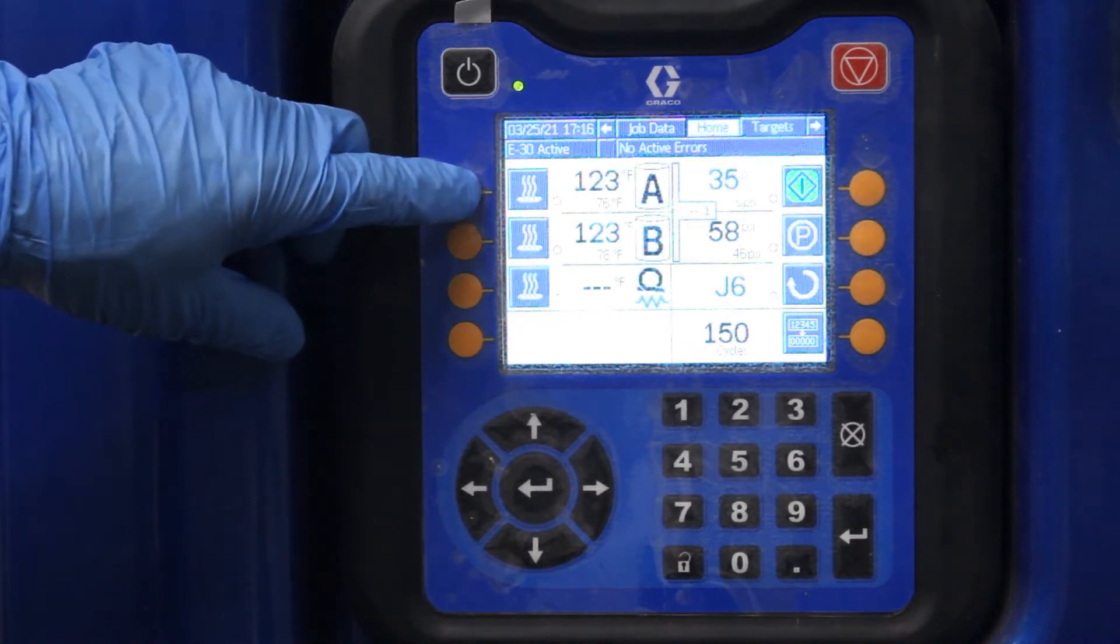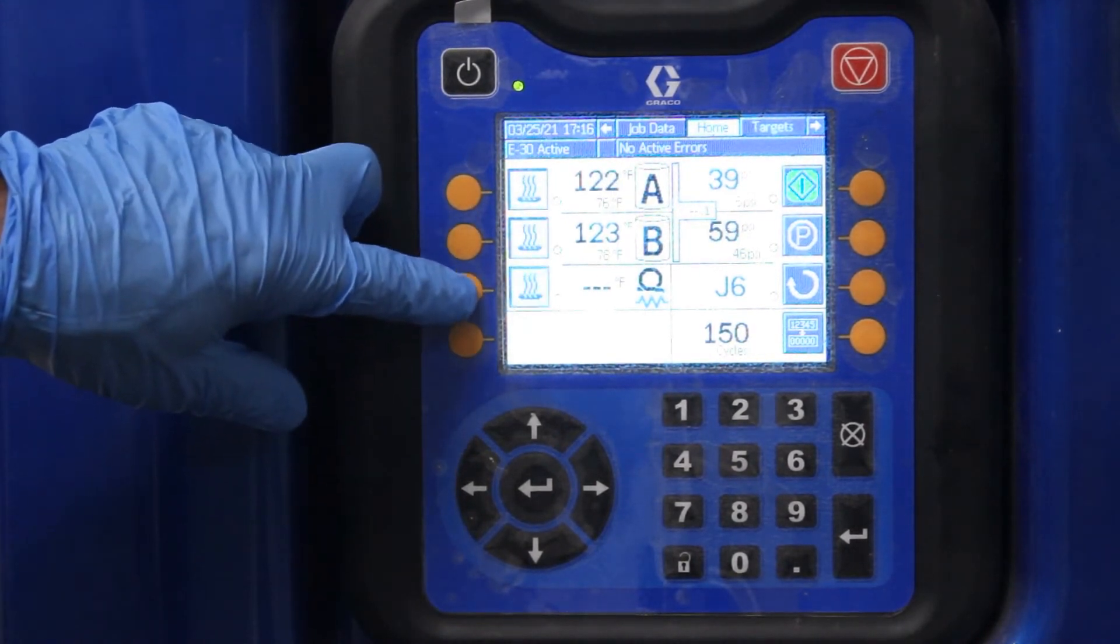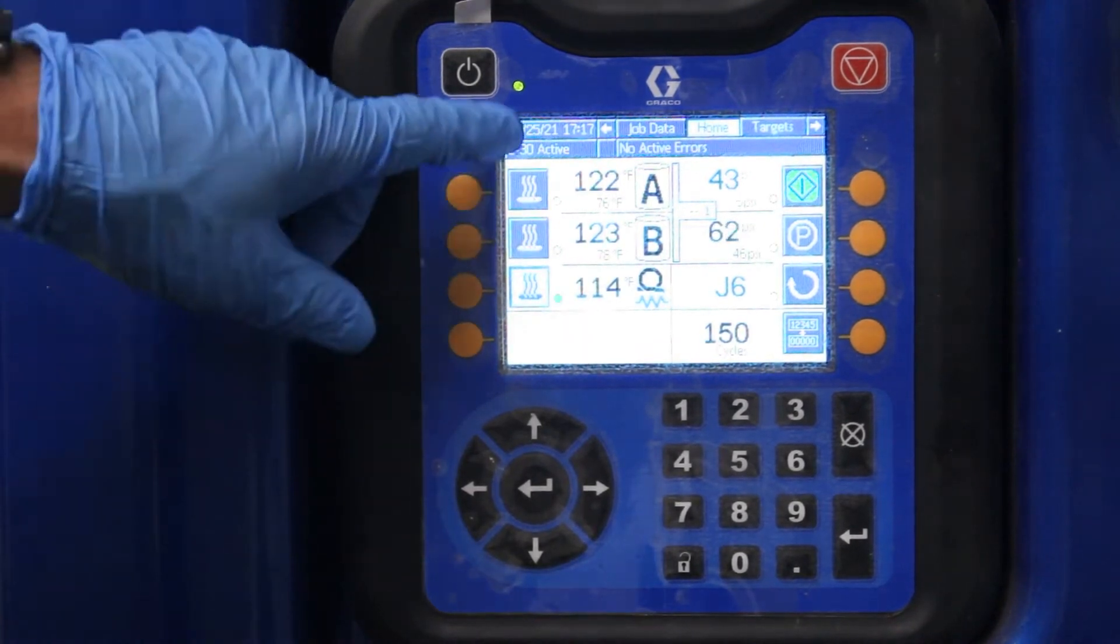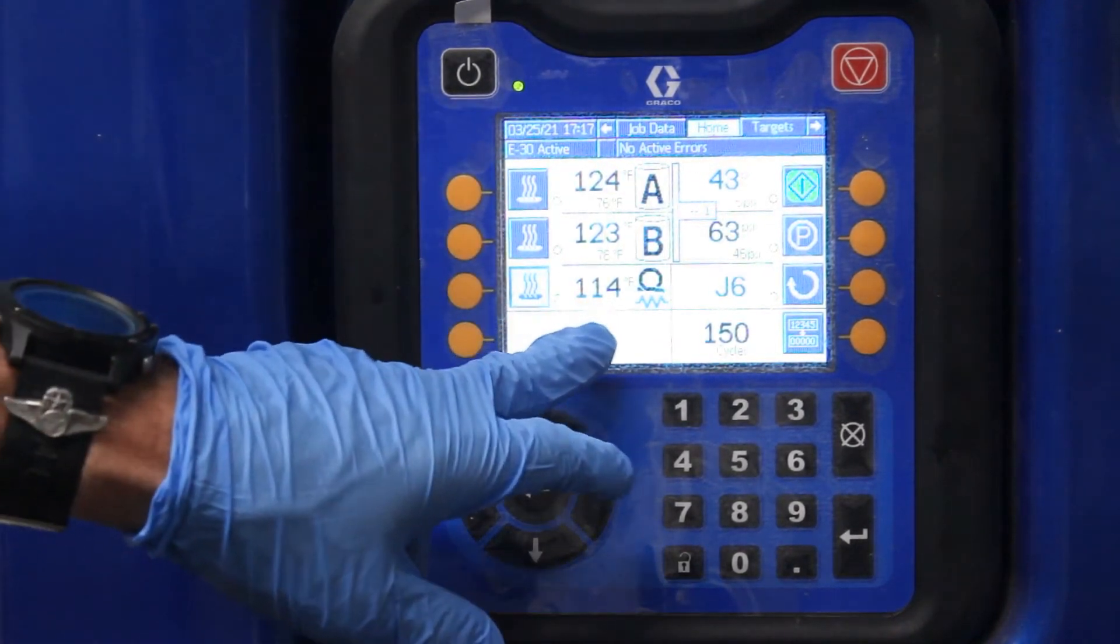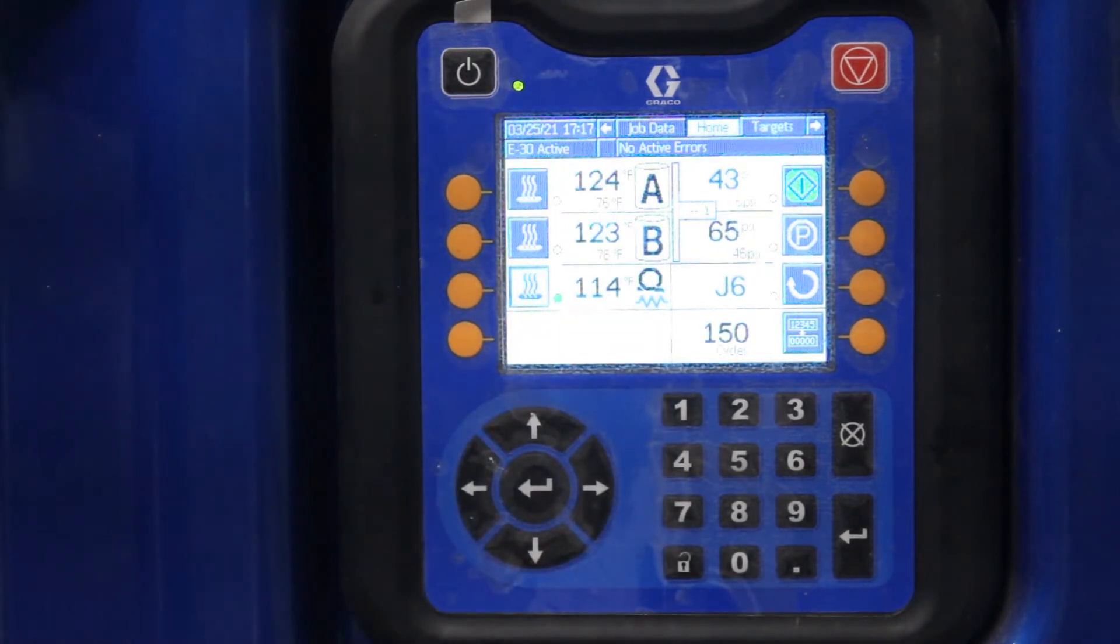To turn the heaters on, there's your A side, B side, and hose heat. If you notice, push them, they drop off. Right here, this little emblem means we're running in resistance mode.